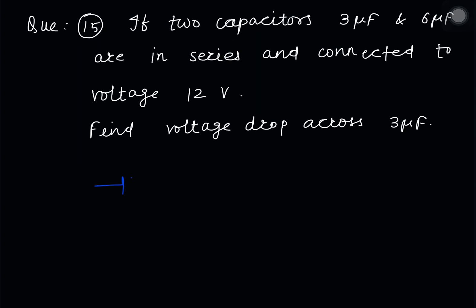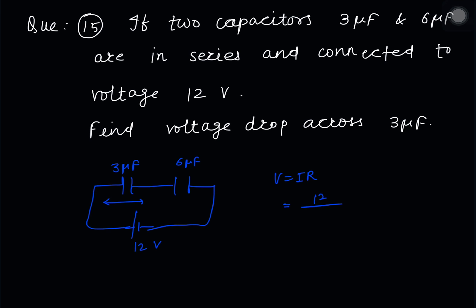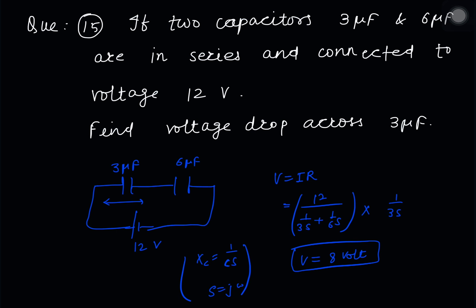In this question, there are capacitors of 3μF and 6μF connected in series with 12V. Using the voltage division rule, V = IR. The impedance of a capacitor is X = 1/(jωC) via Laplace transform. The total impedance is 1/(3s) + 1/(6s), so the voltage drop across each capacitor is calculated accordingly.